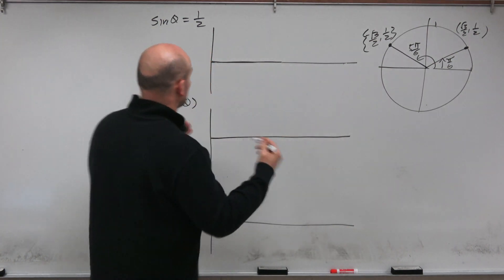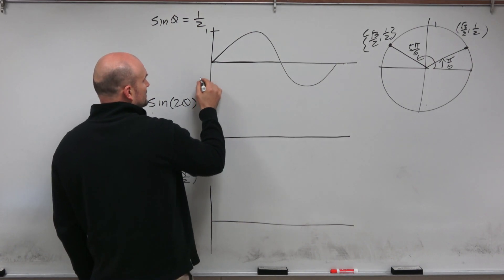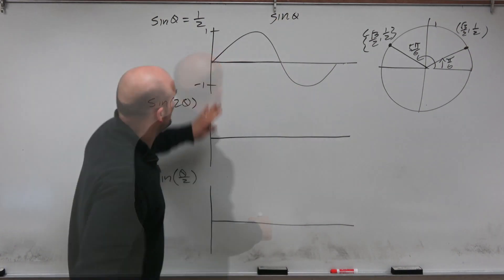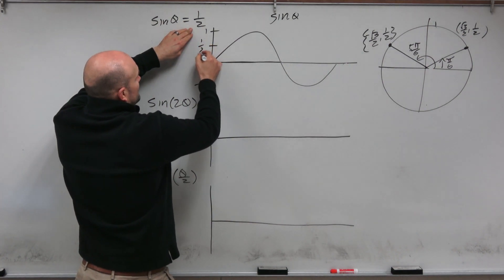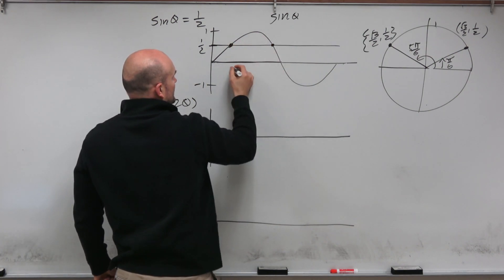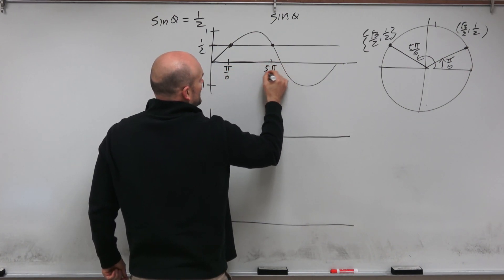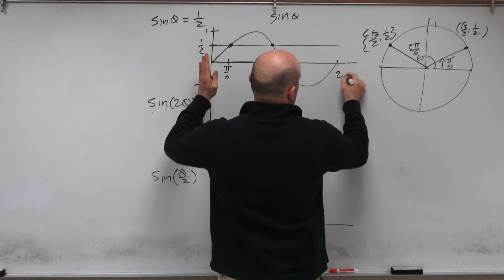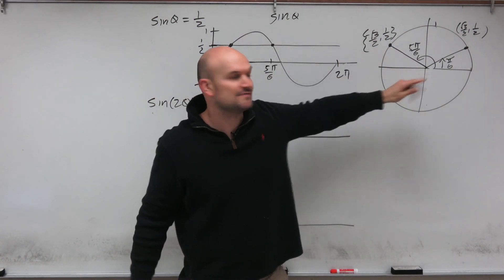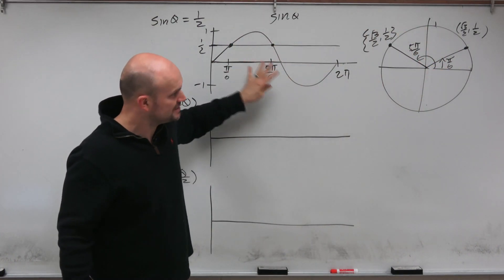Now let's look at this from a graphical approach. Looking at the graph of sine, we have a max of one and a min of negative one. If we want to intersect that at the line of one half, we can see when do these graphs intersect? They're going to intersect at pi over six and at five pi over six. So you can see the solutions from zero to two pi — there are only these two, the only time it intersects when sine is equal to positive one half. Hopefully you can see this relationship between the unit circle and the graph on zero to two pi.